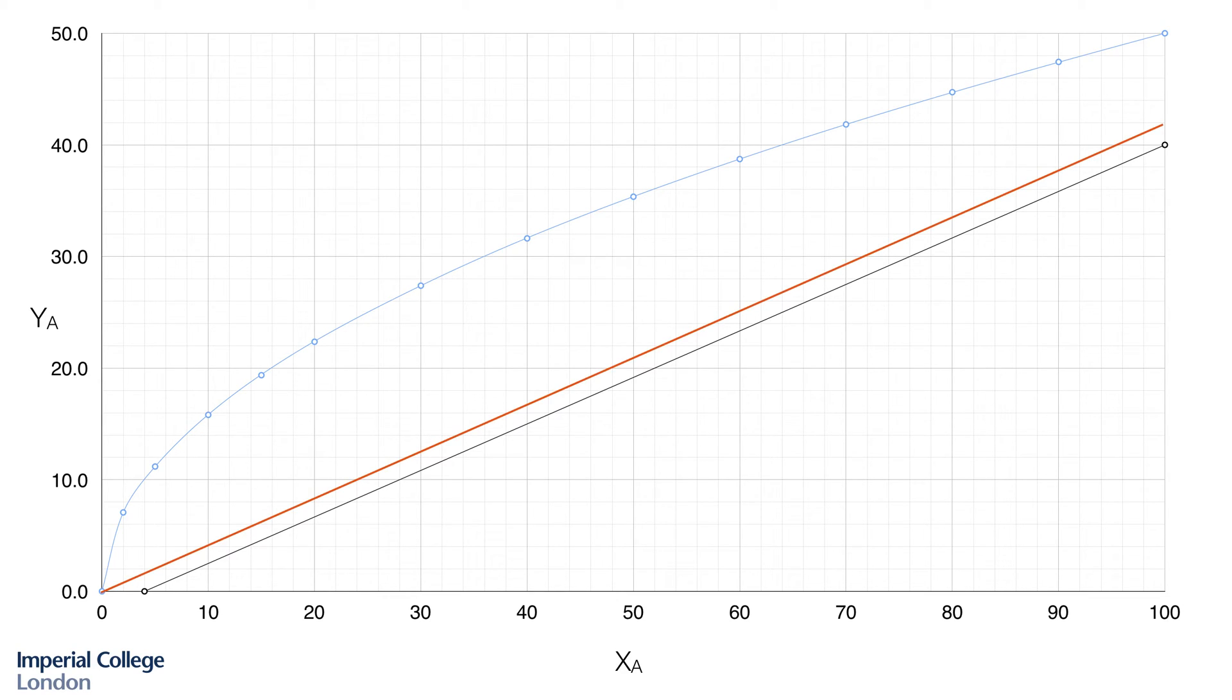However, we can actually construct multiple operating lines that satisfy those three conditions. So these operating lines all have an endpoint at xA equals 100, they all have an endpoint here with y equal to zero, and they all have the same slope. So which of them is correct?